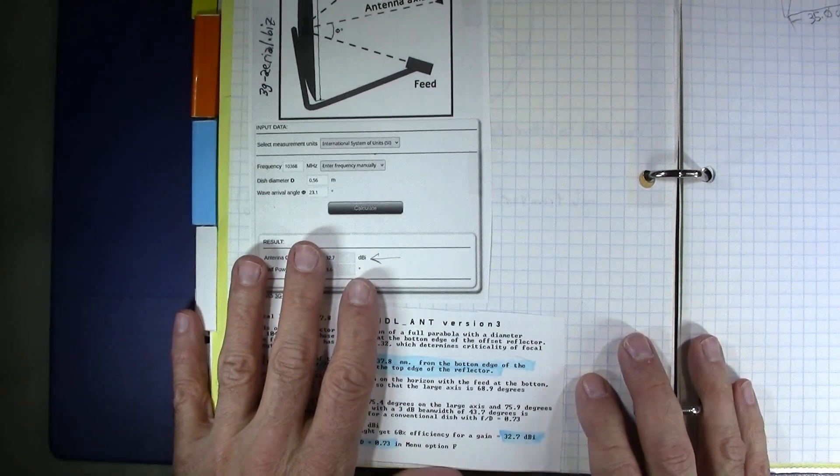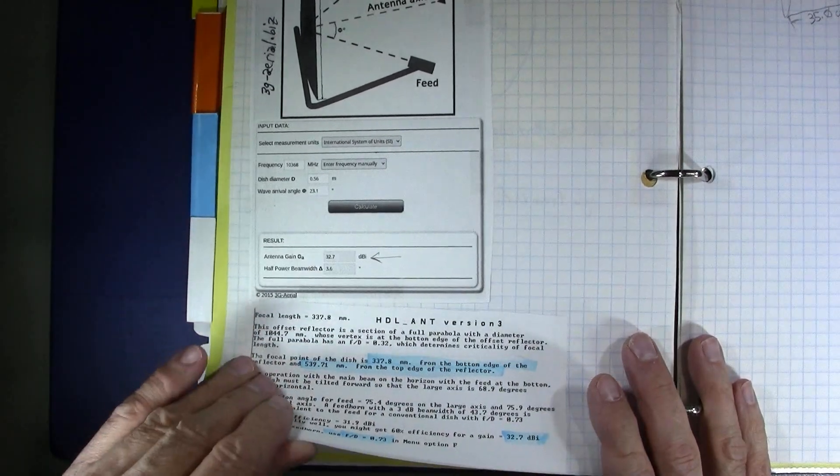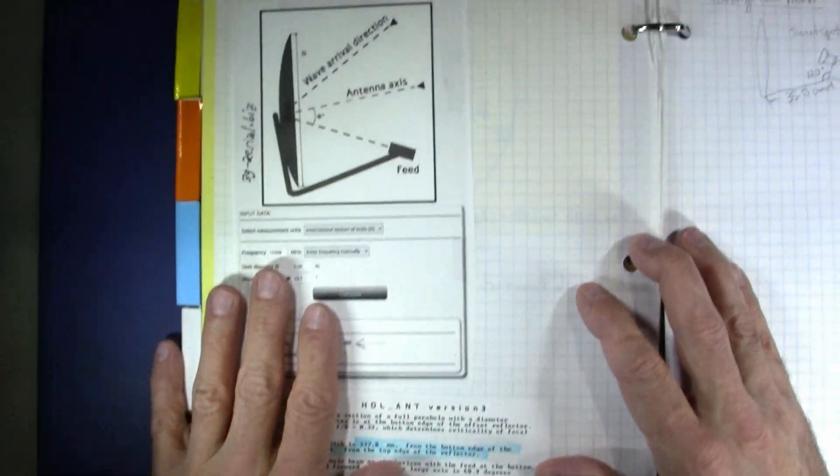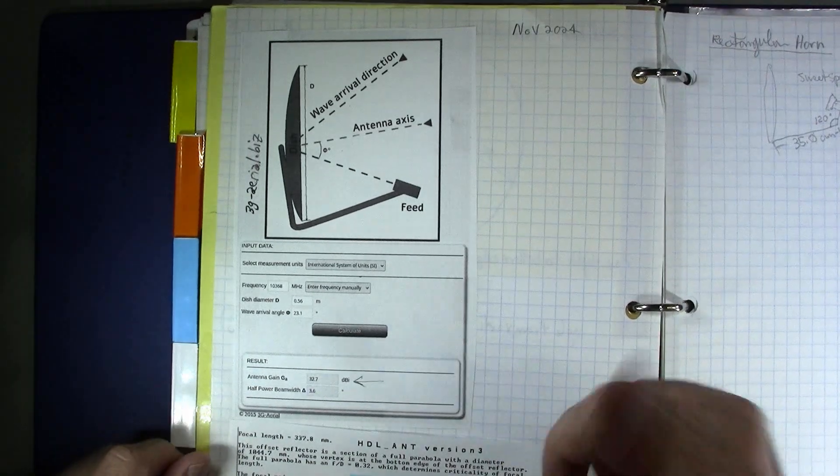So there you go, enough for now about the dish. Next step is to show you the feed points that I could have used for this dish. And I hope to see you soon. 73.